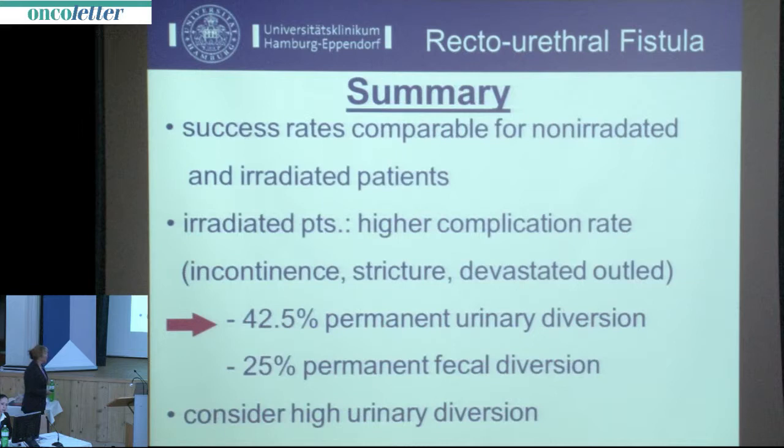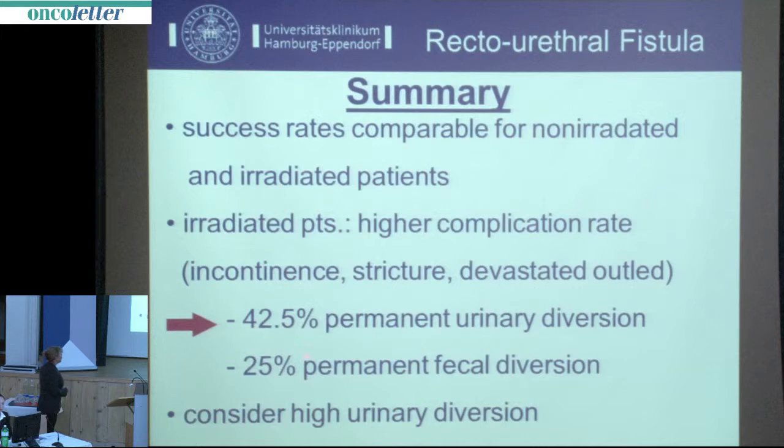High-volume centers prefer the perineal approach with tissue interposition, commonly the gracilis muscle. The success rate for fistula closure is high. However, despite comparable closure rates for non-irradiated and irradiated patients, irradiated patients have a much higher complication rate: around 40 percent will need permanent urinary diversion and 25 percent fecal diversion. When considering initial therapy for complex cases, please consider early urinary diversion more often, as it can solve the problem with one operation.